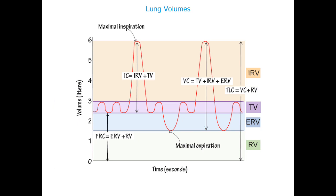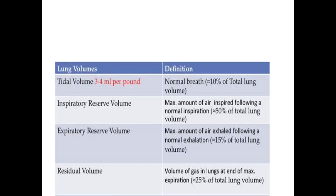Tidal volume accounts for 500 ml. On the spirogram you can see the tidal volume going in and out — in and out — that is the tidal volume of 500 ml, labeled as TV.